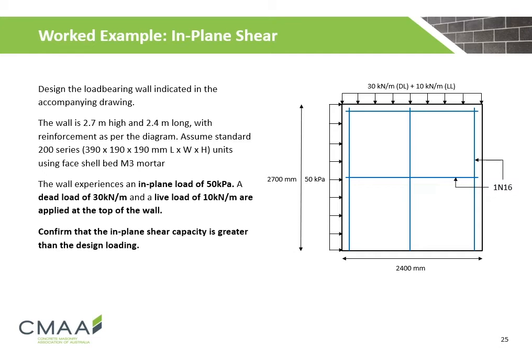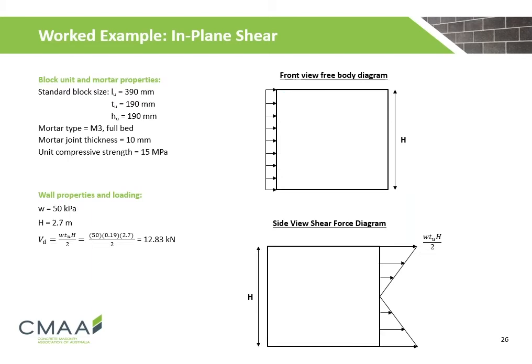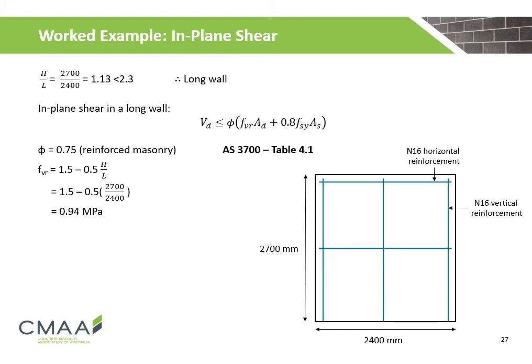This example requires us to design a load-bearing wall with an in-plane loading of 50 kPa. A 30 kN per metre dead load and a 10 kN per metre live load are applied at the top of the wall. The wall is 2.7 metres high and 2.4 metres long, using standard block units and face shell bedding of M3 mortar. Horizontal and vertical steel reinforcement is used as per the diagram. The unit compressive strength is 15 MPa. With a 50 kPa in-plane loading, the shear force acting on the wall is calculated to be 12.83 kN.